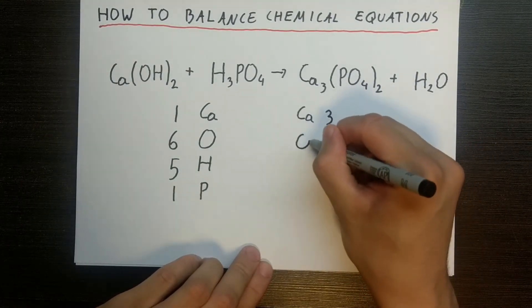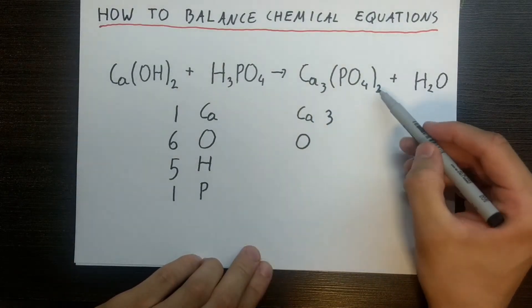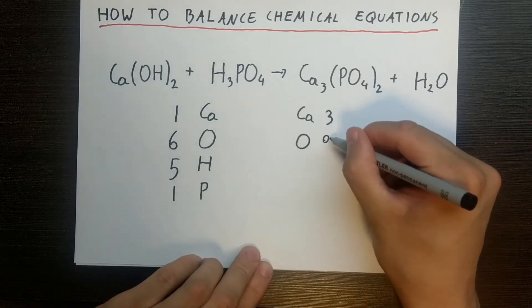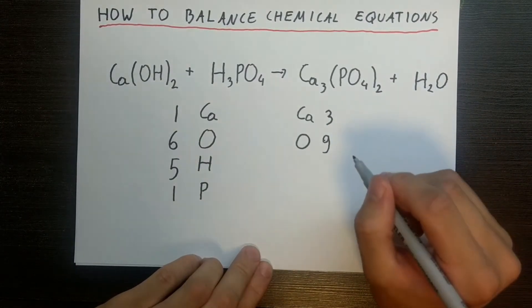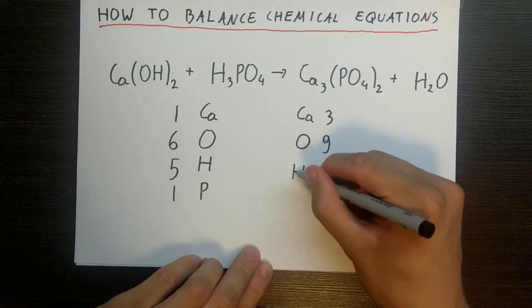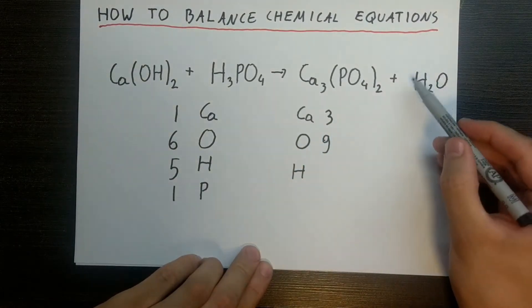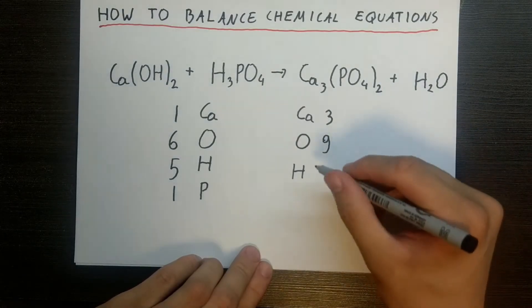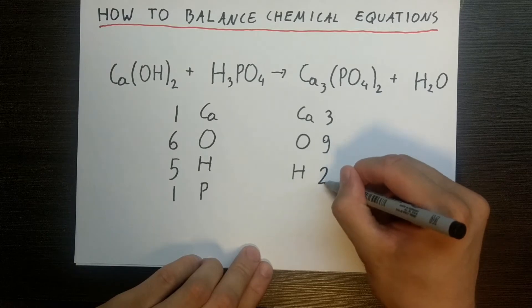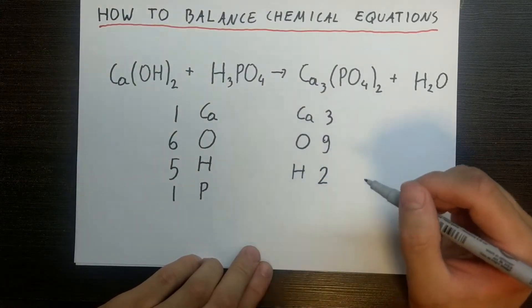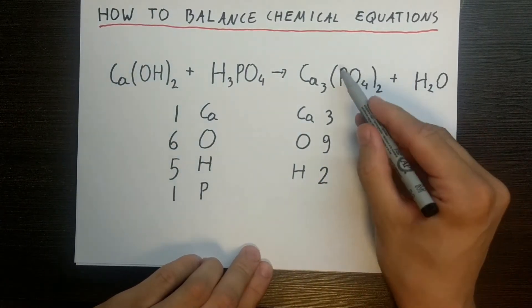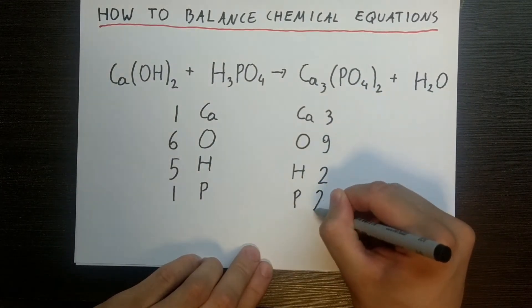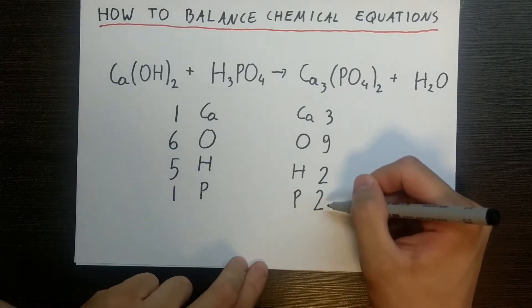Oxygens: we have eight oxygens in this molecule, along with one oxygen here, so we have nine oxygens in total. Hydrogens: we have two hydrogens here and no more on this side, so two in total. Phosphorus: we have two phosphorus molecules here, so two phosphorus in total on this side of the equation.